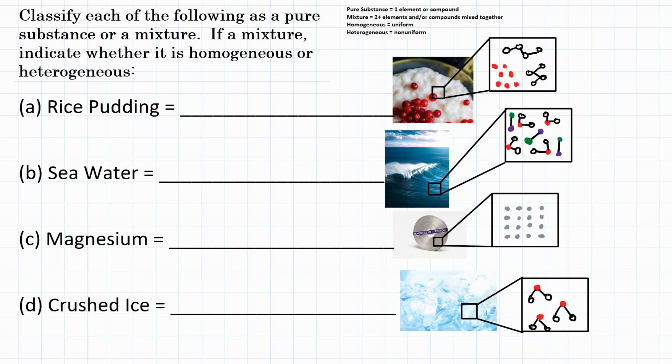First up is rice pudding. Now rice pudding is actually made of many different elements and compounds. So that is going to make rice pudding a mixture.